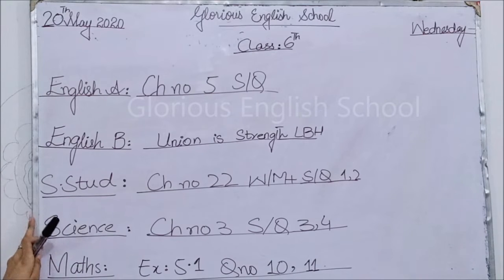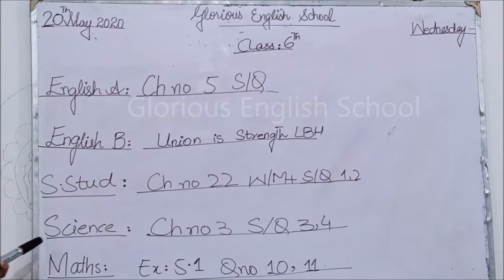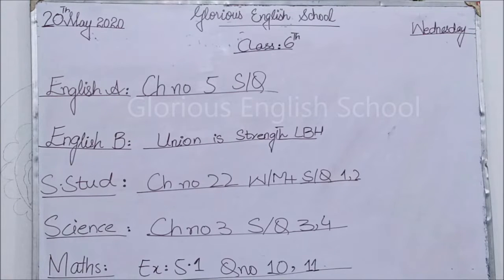Next, Social Studies Chapter 22 — your word names and short questions 1 and 2 have also been explained in previous videos. You need to memorize those well. Next, Science Chapter 3, short questions 3 and 4 — that description has also been given before. You need to memorize it well.